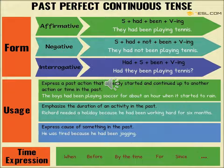Let us see the structure of Past Perfect Continuous Tense. For an affirmative sentence: subject plus had been plus first form of the verb plus -ing. For a negative sentence: subject plus had plus not plus been plus first form of the verb plus -ing. For an interrogative sentence: had plus subject plus been plus first form of the verb plus -ing. For an interrogative negative sentence: had plus subject plus not plus been plus first form of the verb plus -ing.